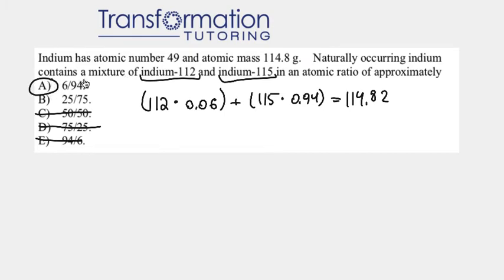Again, the reason A is the answer — even without a calculator — is because 115 is so close to the atomic mass of 114.8, which tells us that indium-115 must be the most abundant isotope and should be really, really abundant. The atomic mass closely reflects it, and indium-112 should be very low in abundance. So our answer is A. This is Maya from Transformation Tutoring — I hope you found this video helpful. Please like and subscribe, and I look forward to seeing you in more general and organic chemistry videos!